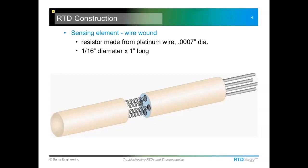First off, RTD — Resistance Temperature Detector Construction. This is what we call a wire-wound sensor; it's one of the more common styles. It's a ceramic tube, and we make little coils of platinum wire and thread them inside the tube, then attach external lead wires. The internal wires are 7 ten-thousandths of an inch in diameter, so as you can imagine, they're fairly fragile. They have to be supported somewhat so that during shock and vibration they're not moving around too much, but if tied down too much that can put strain on the wire and cause a resistance shift.